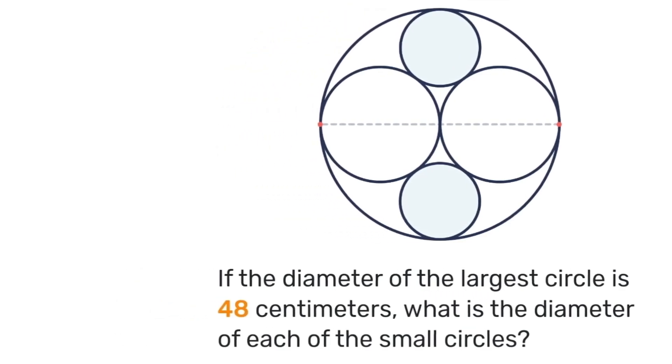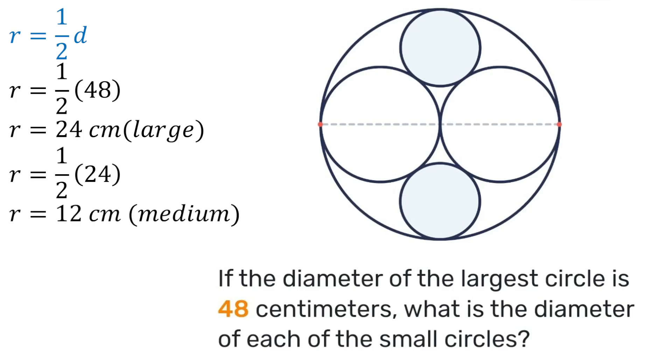I'm going to be solving it this way. First, let's see. We know that the diameter of the largest circle is 48 centimeters, so we can determine some radii using the formula that radius is half of the diameter. So for the largest circle the radius will be half of 48 which is 24 centimeters, and then for the medium circle we know that it's going to be half of 24 which is 12 centimeters.